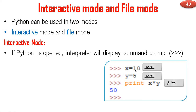I type x = 10, then press the enter button, and the command prompt window appears again. Then I type y = 5 and press enter. Once again it will show the command prompt. Then I type print x * y and press enter. It will show the result and once again the command prompt.